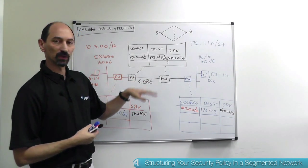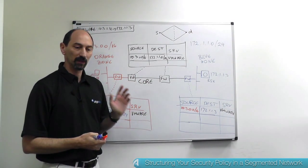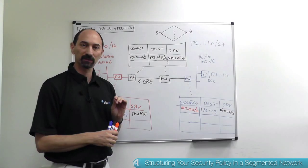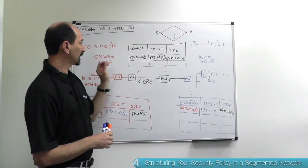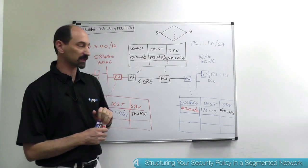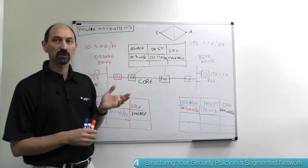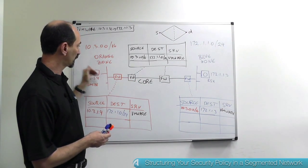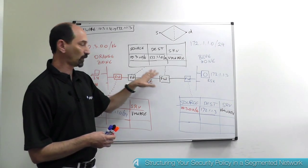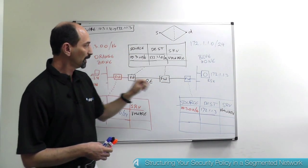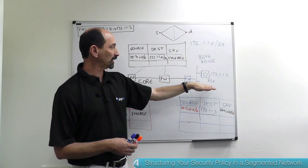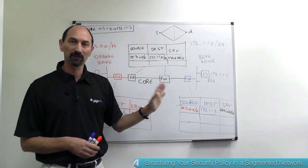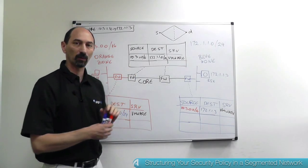Now notice that by writing the rules in this way, I have not introduced any traffic that wasn't specifically requested. So I'm following the least privilege principle because any traffic using this VMware service going between any other combination of IP addresses is going to be blocked somewhere either by the orange zone firewall when it tries to exit the orange zone or by one of the core firewalls if it's coming from the wrong direction or by the blue firewall if it's trying to get into the blue zone but not going to specifically that IP address.